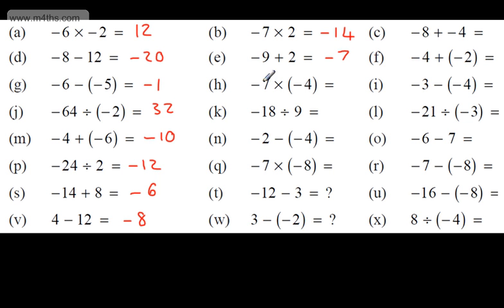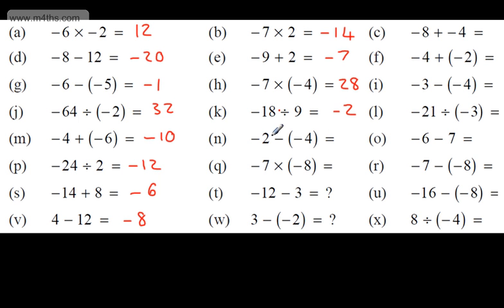Multiplying two negative numbers: 7 times 4 is 28; two signs the same, so it's positive 28. 18 divided by 9 is 2; one negative, one positive, so negative 2. Starting at negative 2 and subtracting a negative number increases the value — add 4 to negative 2 — giving positive 2.